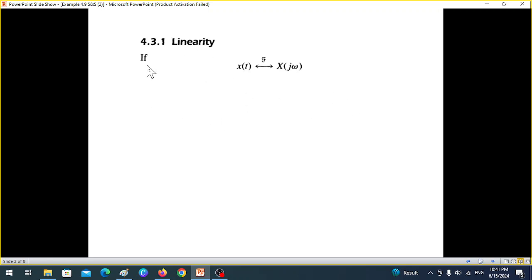That means if a signal in the time domain is x(t), then its frequency domain or Fourier domain representation will be X(jω). And if there's another signal called y(t), then its Fourier transform will be capital Y(jω).